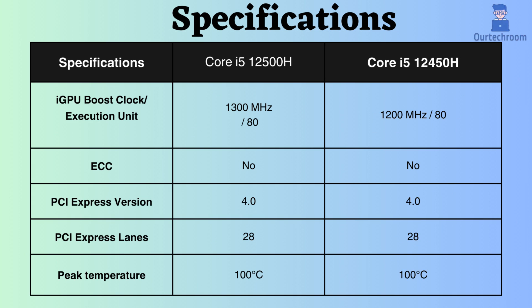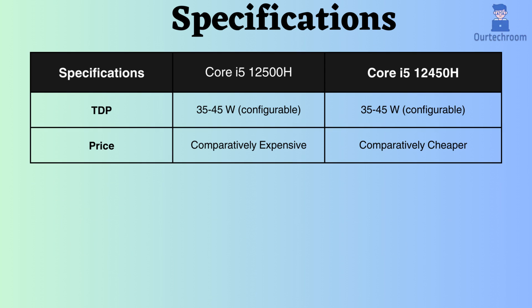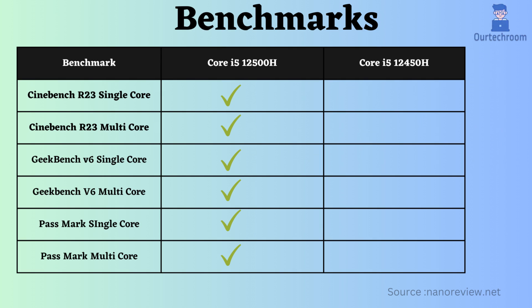Neither of them supports ECC, making them unsuitable for critical systems like workstations and servers. Both processors support PCI version 4 and have 28 PCI lanes. The TDP of both processors is configurable and falls within the range of 35 to 45 watts. Also, the Intel Core i5-12500H is more expensive than the Core i5-12450H. In benchmark comparisons such as Cinebench R23 single-core and multi-core, Geekbench V6 single and multi-core, and Passmark single and multi-core, the Core i5-12500H performs better.